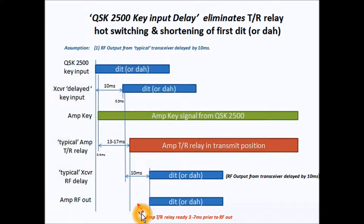So now we have about three to seven milliseconds of buffer time from when the amplifier TR relay is settled to when the RF from the transceiver comes to the amplifier — so there's no shortening of the first dit or dah, and there's no hot switching of the QSK 2500 TR relay. If this clears up some of the questions you may have about using an external QSK box, feel comfortable that it will take good care of your amplifier.